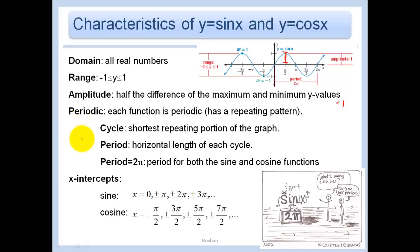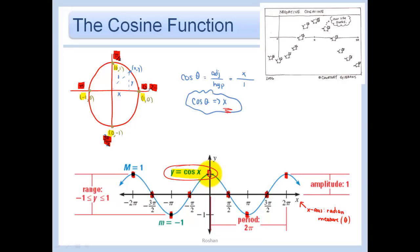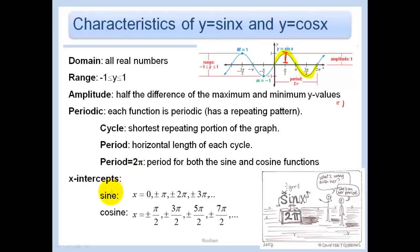Each of these functions is periodic — you see that repeating pattern. A cycle is the shortest repeating portion of the graph, and the period is the horizontal length of each cycle. One cycle around the unit circle took 2 pi, so the period is 2 pi for both the sine and cosine graphs. For cosine, even though we start at a different point, one complete cycle is still from one peak back to the same point — period is still 2 pi. The x-intercepts you can simply read from the graph; you don't need to memorize them.